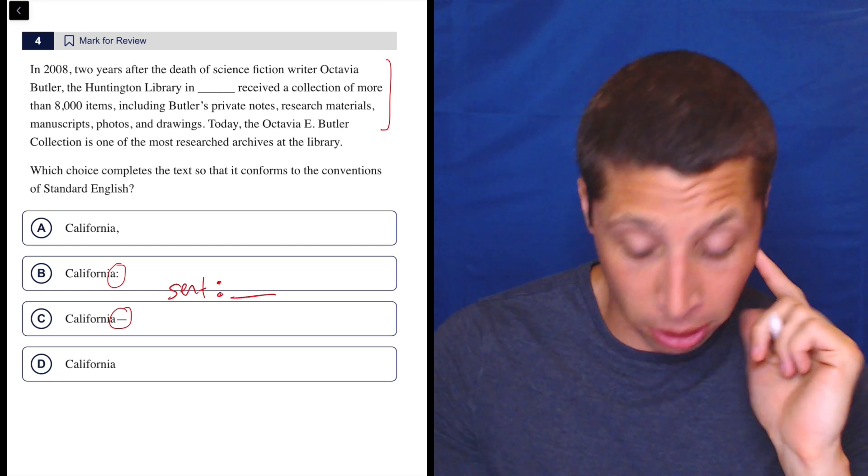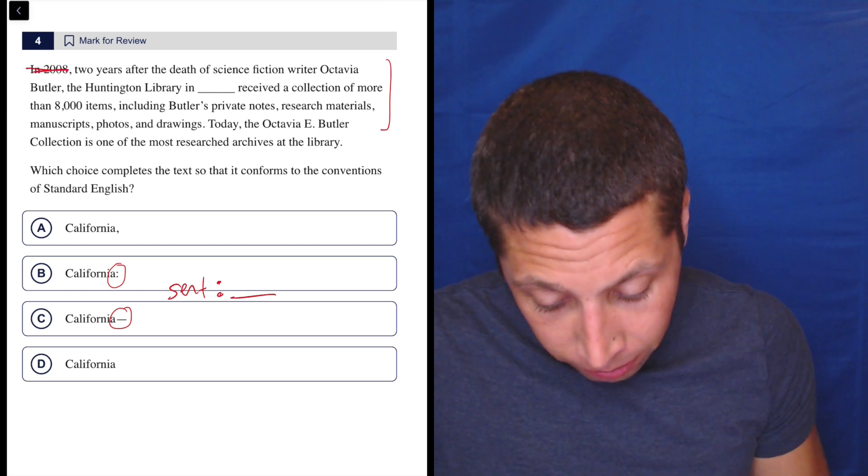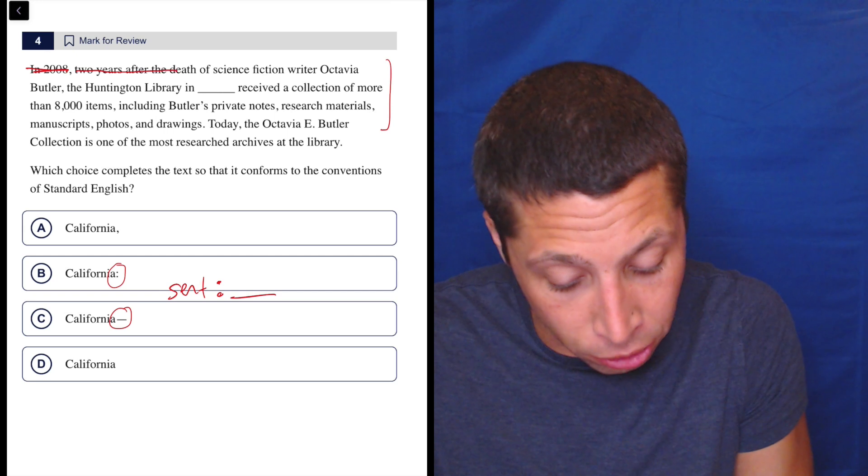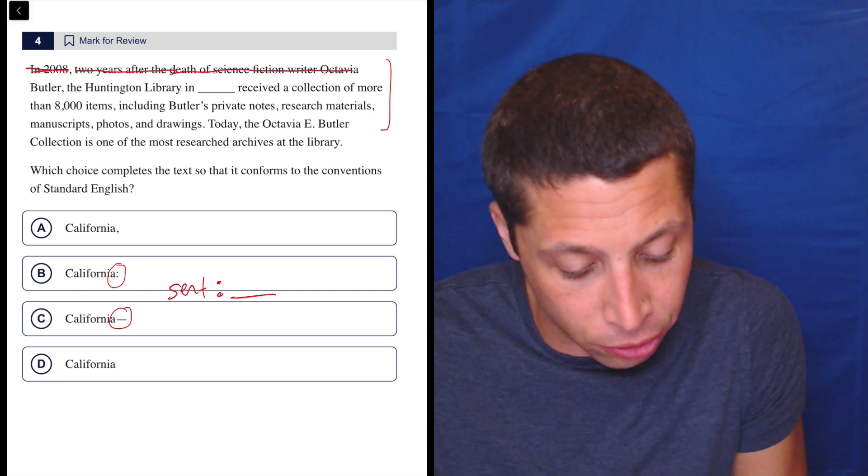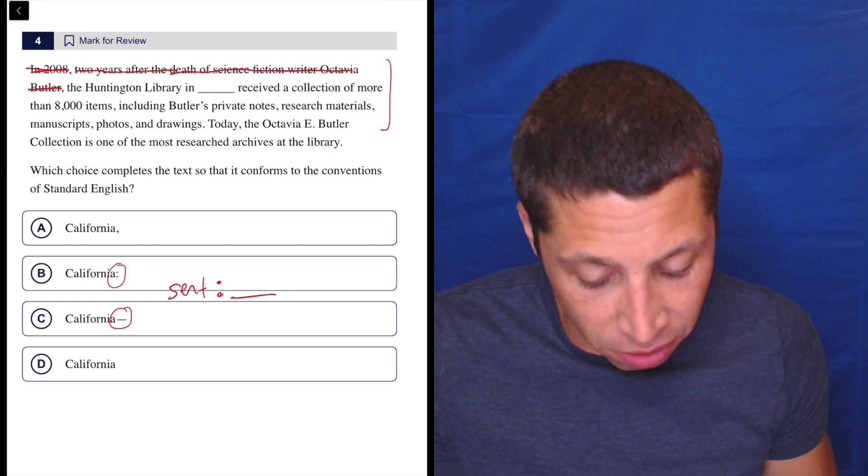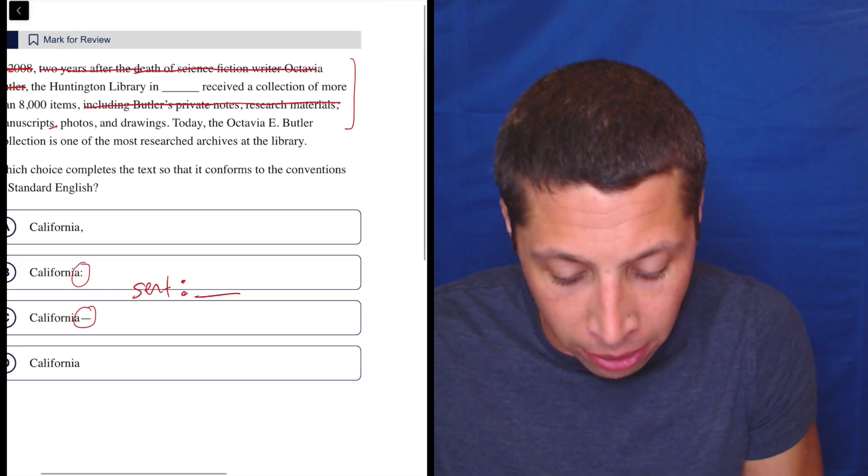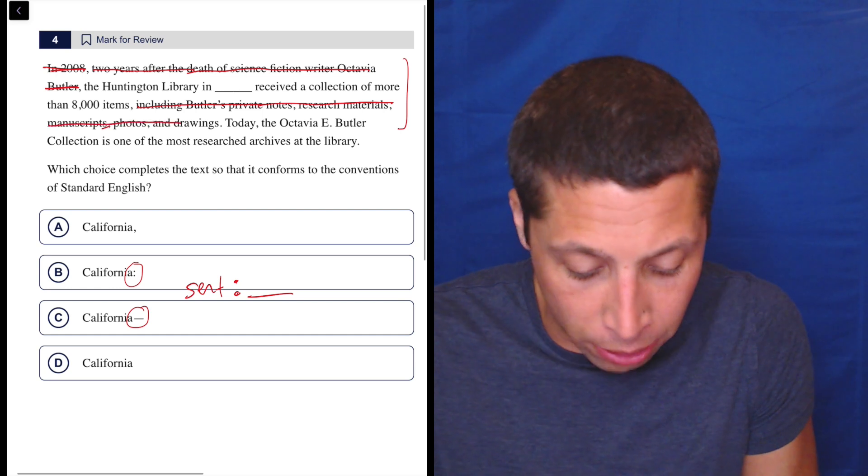So there are a lot of extra clauses here. We have the intro in 2008. Then we have, I guess, an appositive that kind of describes it. Two years after the death of science fiction writer Octavia Butler, the Huntington Library in California received a collection of more than 8,000 items. And then we have a list at the end that we can get rid of here because it's just extra.